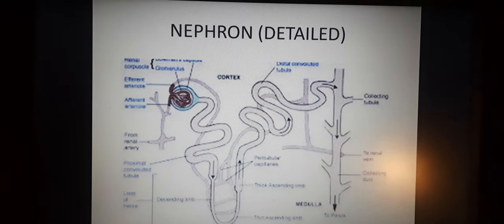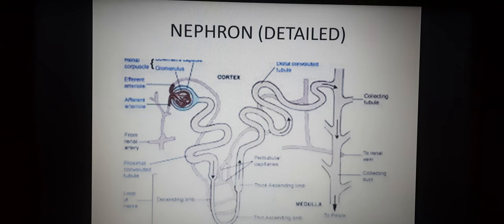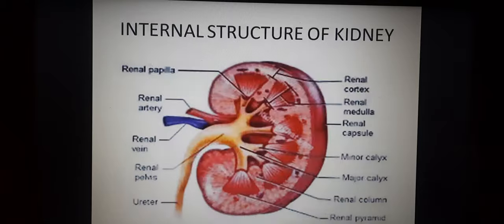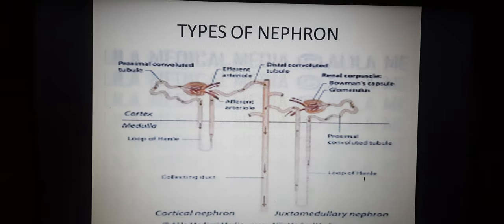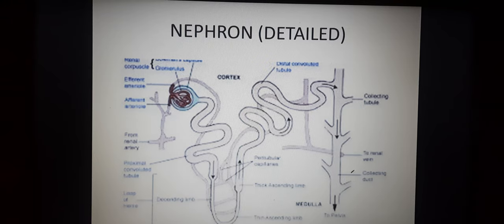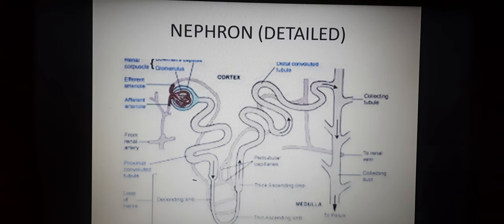Nephrons are the structural and functional units of the kidney. Each nephron has two parts: glomerulus and renal tubules. The glomerulus is a tuft of capillaries formed by afferent arteries — a fine branch of the renal artery. Blood from the glomerulus is carried away by the efferent arteriole. I will now explain this with the help of the blackboard.